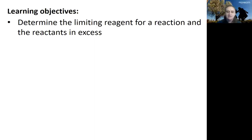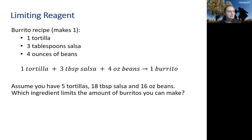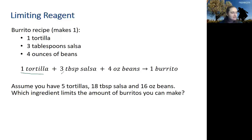Before we look at a chemical example, let's look at a more practical example: making burritos. Imagine you have a burrito recipe to make one burrito, where you combine one tortilla, three tablespoons of salsa, and four ounces of beans. Written as a chemical reaction, one tortilla plus three tablespoons of salsa plus four ounces of beans yields one burrito.